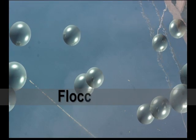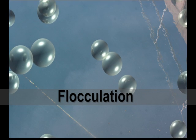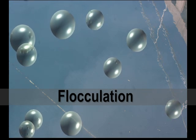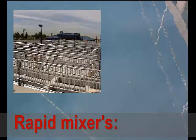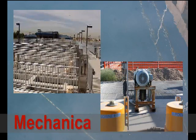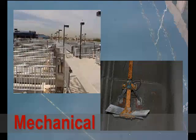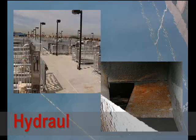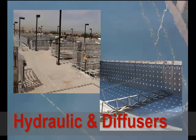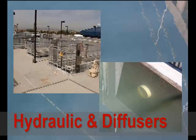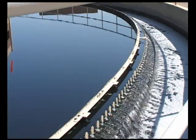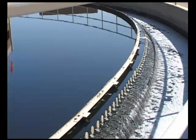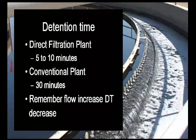Flocculation is the process of bringing together destabilized or coagulated particles to form larger masses which can be settled and filtered out of the water being treated. In this process, which follows the rapid mixing, the chemically treated water is sent into a basin where the suspended particles can collide, agglomerate, or stick together and form heavier particles called floc. Appropriate detention time — the length of time water remains in the basin — can help facilitate this process.